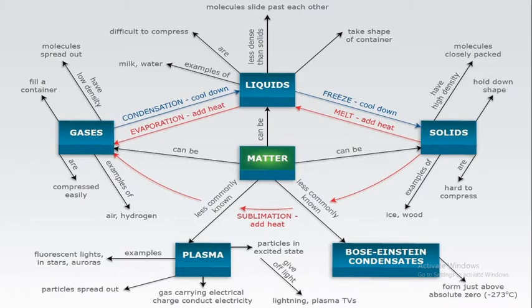We studied that matter is classified into five states: solids, liquids, gases, plasma, and Bose-Einstein condensate, or BEC. Different properties of each state of matter are explained, and we can see clearly how matter can be converted from one form to another by changing heat and temperature. When we change the temperature, matter changes from one form to another.